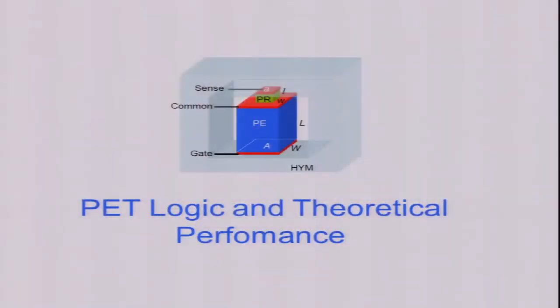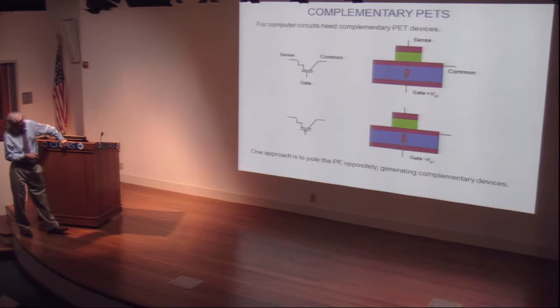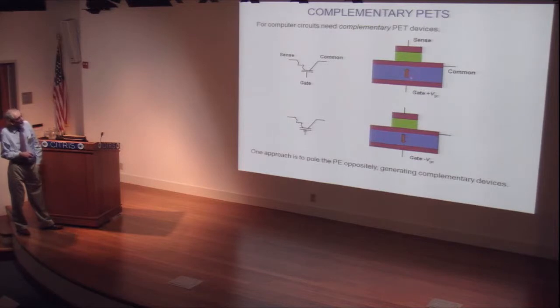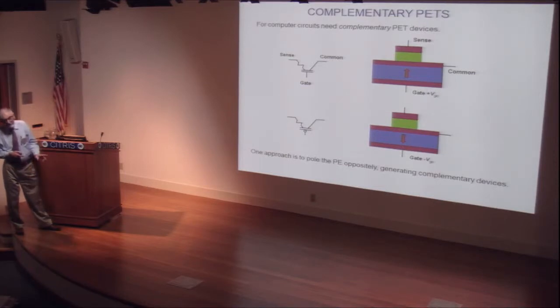What about the capability for logic and the theoretical performance? If we're going to build a CMOS-like structure, we have to be able to build devices that turn on with positive voltage and devices that turn on with negative voltage. One way of achieving that is to simply reverse the polling of the piezoelectric. If you can imagine some devices polled this way and some devices polled that way, these devices will be like the P&N FETs familiar to us. There is another way of doing it, using a four-terminal device.